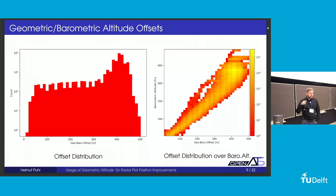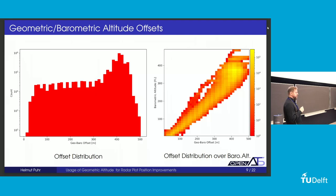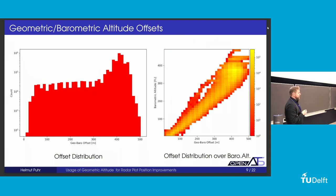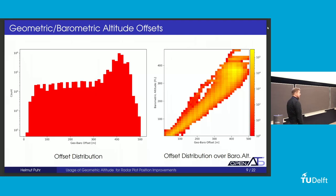On the right-hand side, the same distribution as a two-dimensional histogram. On the x-axis again the difference, and on the y-axis the barometric flight level. We can see the higher the flight level, the larger the offsets, and that a large part of the error distribution is at the upper flight levels. Also, a lot of the data we have is above roughly flight level 250 to 300. From this, we can see there are significant offsets in barometric to geometric altitude.